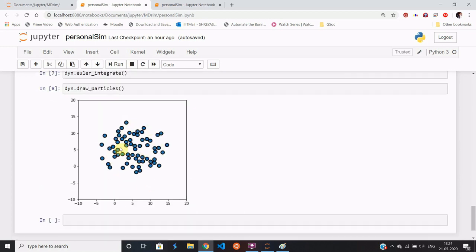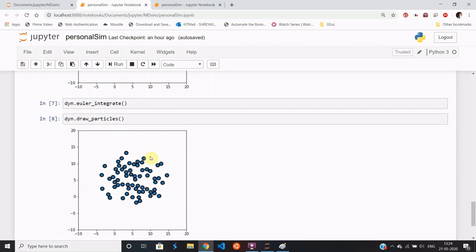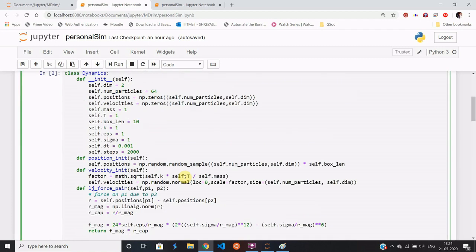This is the initial configuration of the argon atoms. And this is the configuration of the atoms after, in my case, I've put 2000 steps of time interval 0.001.